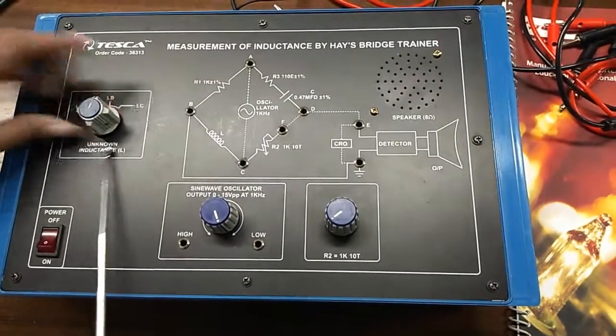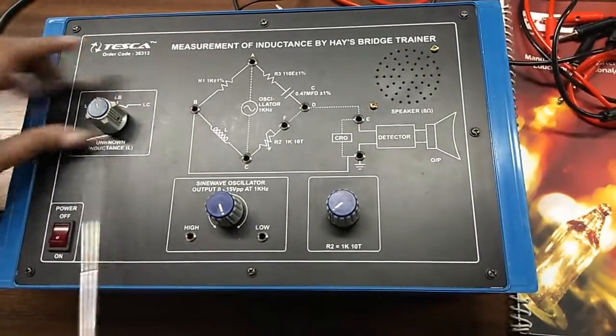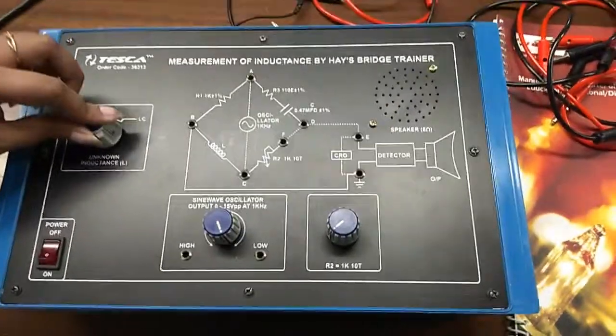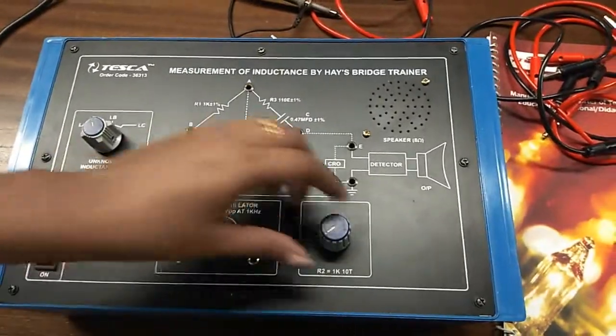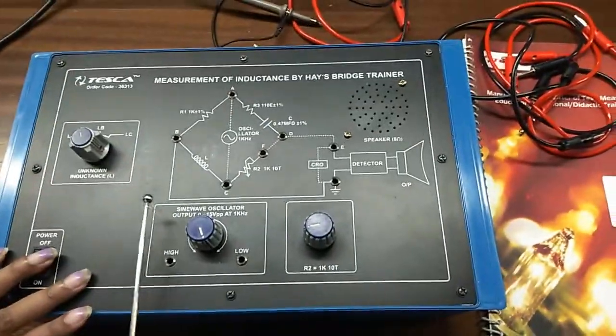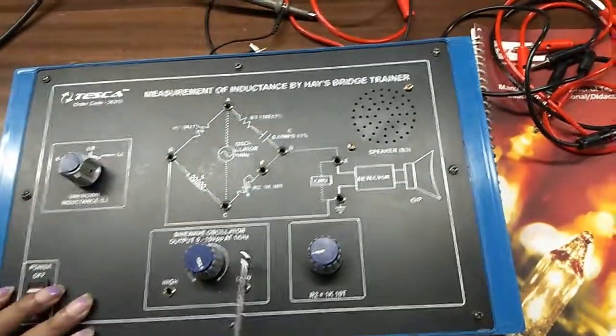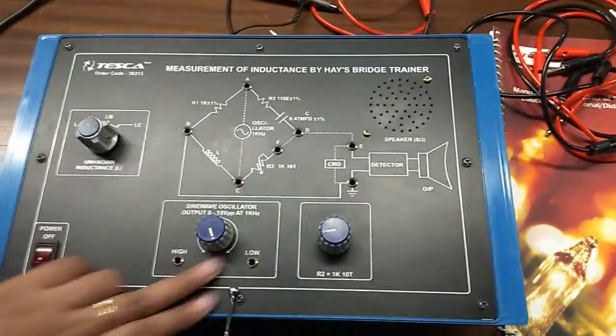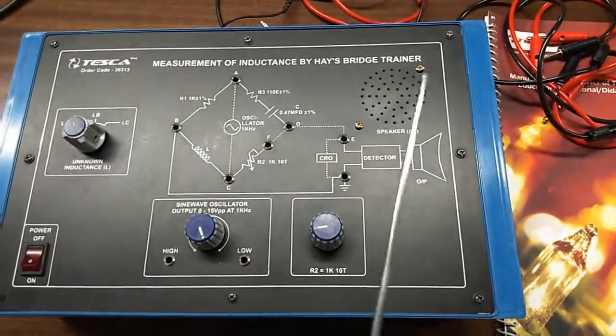This is the unknown inductance. We can select any unknown inductance with the help of this band switch. This is R2 potentiometer and this is the sine wave oscillator, frequency 1 kilohertz. This portion is built in and this is the speaker to hear the sound.